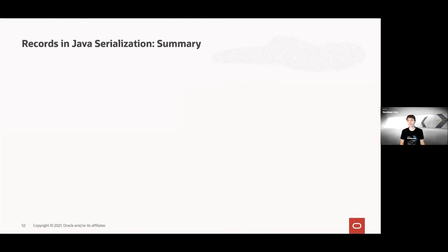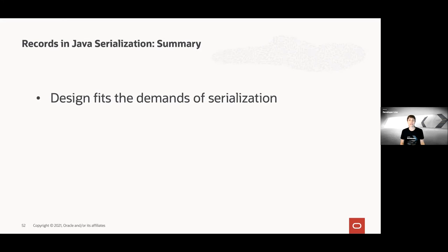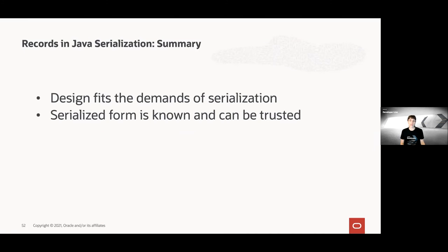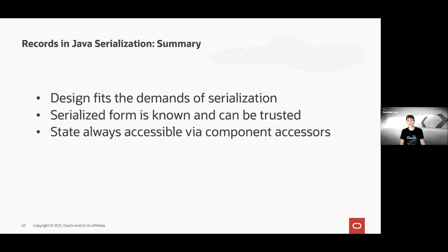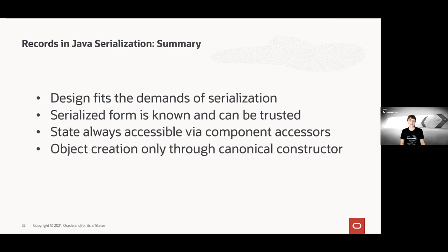To finish, let's sum up how records make serialization better. Firstly, the design of records naturally fits the demands of serialization — they are data-oriented classes and very suitable for serialization. They have restricted accessibility and final state, making them much easier to handle during serialization. The semantic constraints of records allow a tightening of the serialization protocol. The serialized form is known and can be trusted: it's always the record's state, no customization is possible, and this is easy to understand and maintain. We can always use the accessors to retrieve record state without backdoor techniques. And object creation only happens through the canonical constructor — no more off-the-radar object creation. We hope you are just as excited about records as we are, and go try them out.